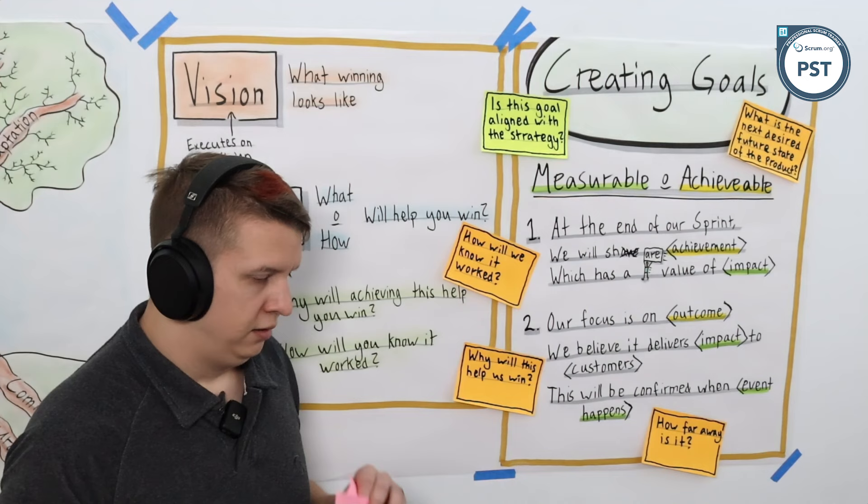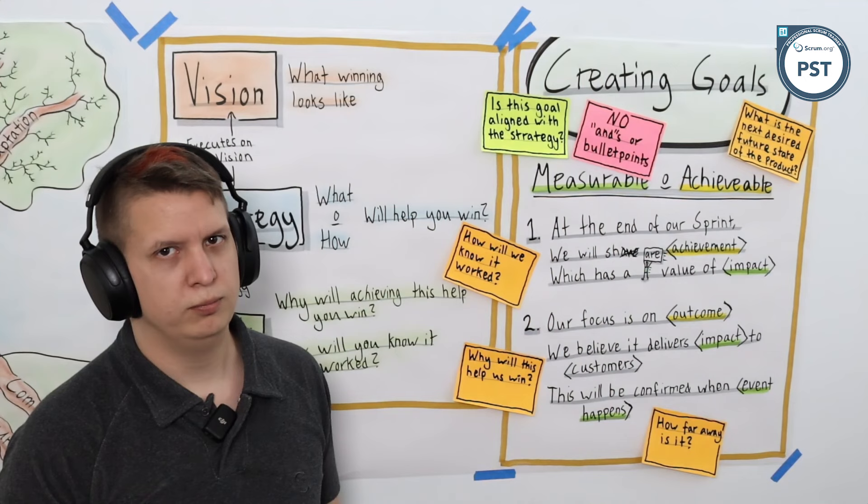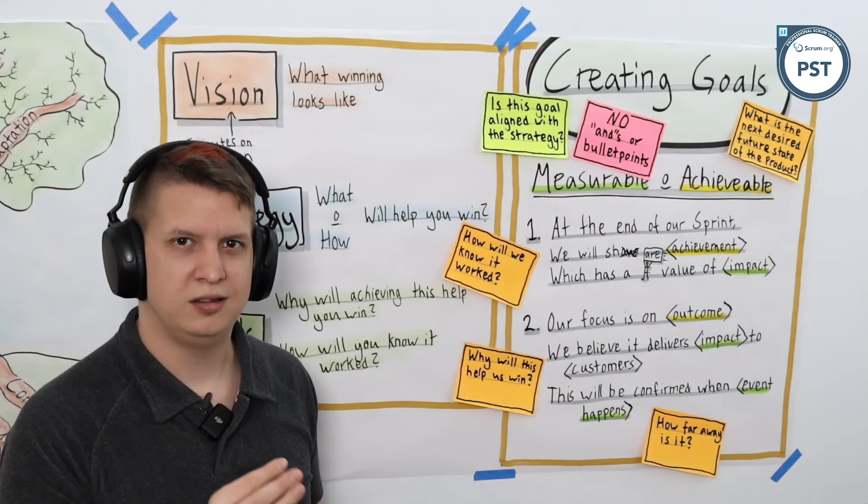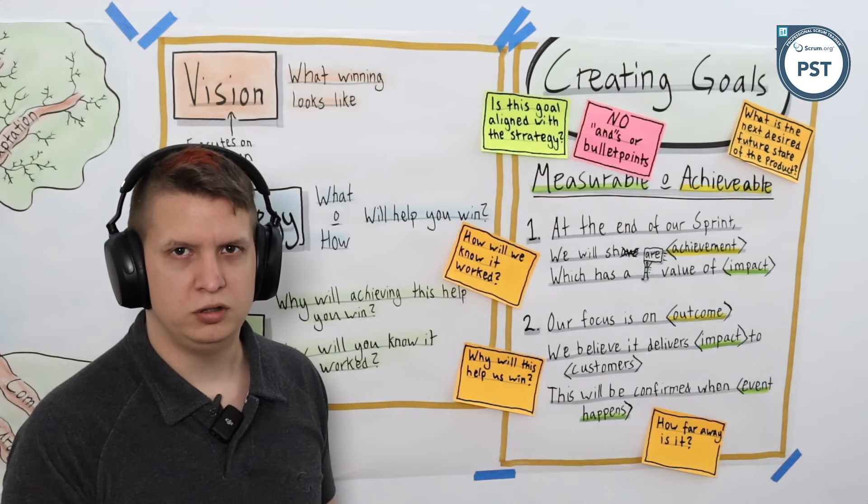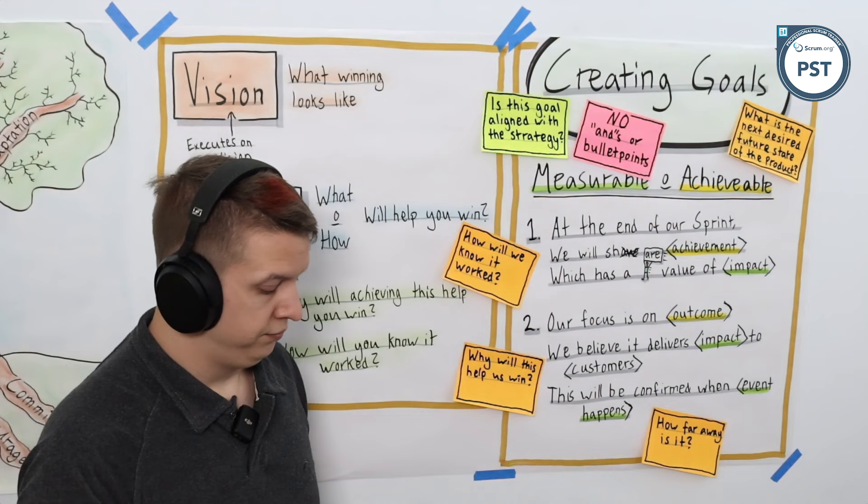And then some words of caution, both for the product goal and the sprint goal. First of all, please, no ands or bullet points. It should be focused. It's the goal. It's the thing you're committing to. Whenever you add ands and or bullet points, you're diluting the purpose, you're diluting your focus, which means you're actually less likely to achieve any of those things.